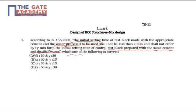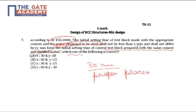For cement, as per recommendations of IS 456-2000, the initial setting time should not be less than 30 minutes to ensure proper placement of cement, because if it hardens before 30 minutes it will not be possible to place the concrete mixture at its position. Hence, the minimum setting time should be 30 minutes, and the deviation allowed in setting times is also 30 minutes as compared to the control test block, making A the correct choice for question number 7.